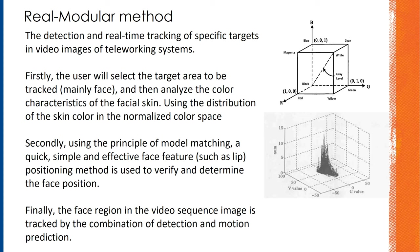Finally, the face region in the video sequence image is tracked by the combination of detection and motion prediction. When we find a picture from the video, we change the green level to exclude some effects from the surrounding environment, which can show up the face more directly to the analyzer.